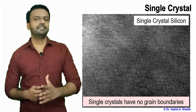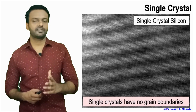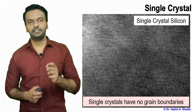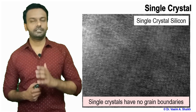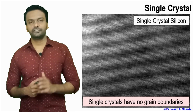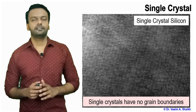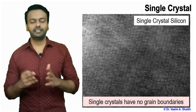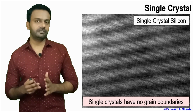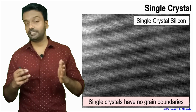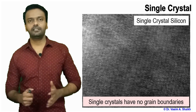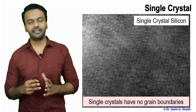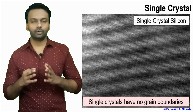Here is an example of a single crystal material. This is an actual transmission electron microscope image where you can see small atoms that are visible. We will compare this image with another image coming up later, where we can see a grain boundary. But this is an example of single crystal silicon — it has no grain boundary and all the atoms are stacked in a particular orientation.